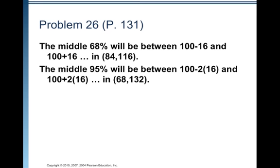The middle 95 percent will be between 100 minus 2 times the standard deviation, so 100 minus 2 times 16 and 100 plus 2 times 16. So 2 times 16 is 32. 100 minus 32 is 68. 100 plus 32 is 132. So that captures 95 percent of all scores.